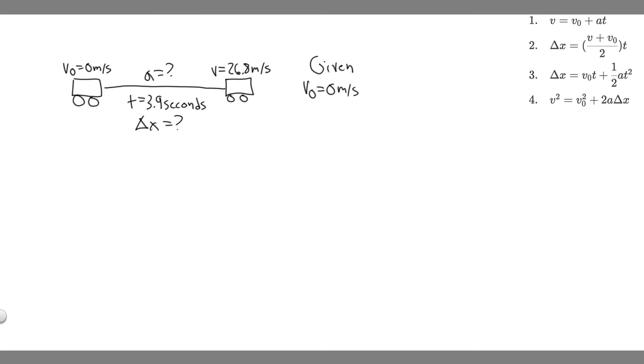We're given the final velocity, which is the velocity at the end of this interval, so the final velocity is 26.8 meters per second. We know the time, how long this interval is going to go on. And what we're trying to do for A is we're trying to find the average acceleration, so A equals question mark. And then for B, we're trying to find the change in position or the distance it travels. So this is the given.